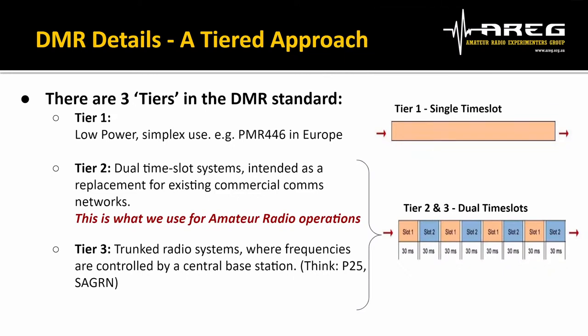The DMR standard talks about three tiers. Tier one is for cheap low-power radios like PMR-466 — Europe's equivalent of UHF-CB — single time slot, simplex, low power. Tier two is where we get into dual time slot systems, intended as a replacement for commercial analog radio networks — this is what we use for amateur radio. Tier three is trunked systems like SAGRN or P25 networks with a control channel and multiple channels for users. We don't use tier three in the amateur radio world.